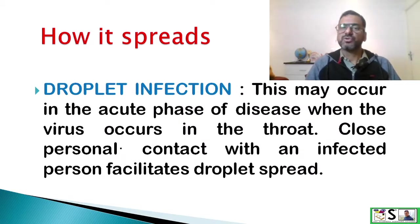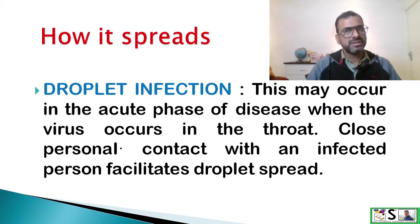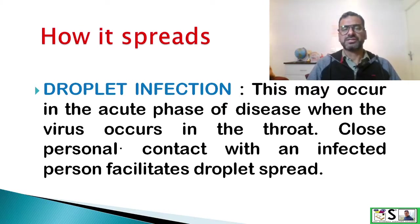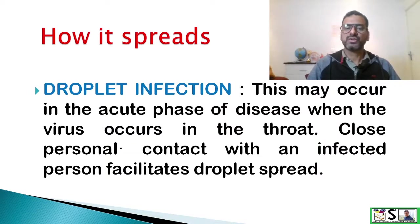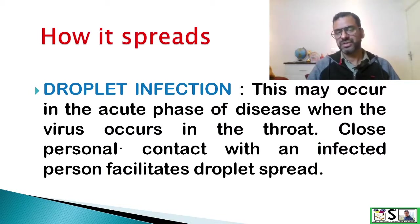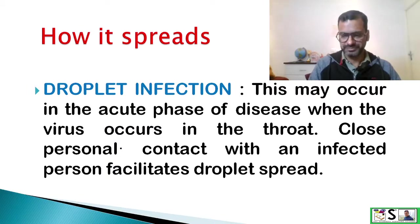The second mode of transmission, which is less common, is droplet infection. This may occur in the acute phase of the disease when the virus is present in the throat. Close personal contact with an infected person facilitates droplet spread.